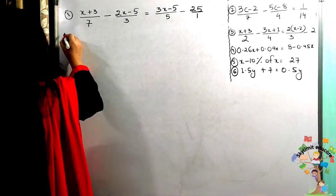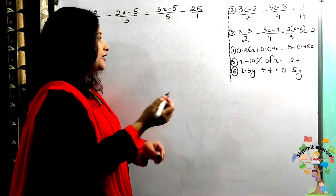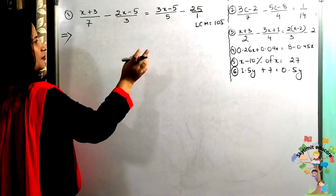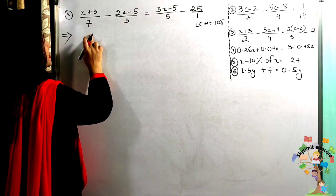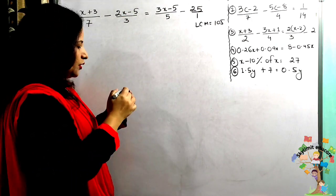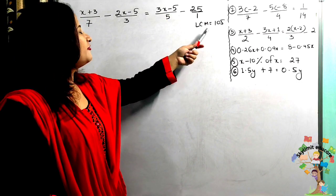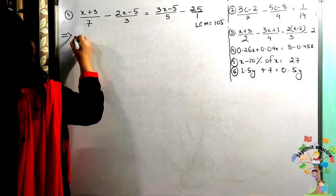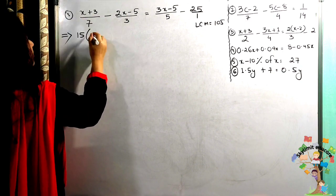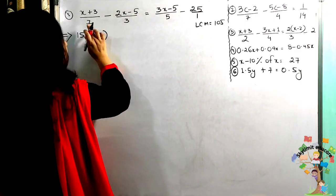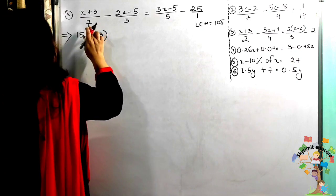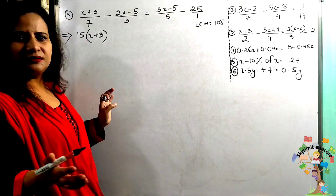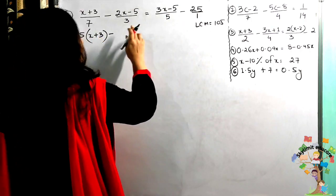So let's start solving. The LCM is 105. You can skip the step of writing 105 multiplied to each term. Instead, LCM divided by the denominator: 105 divided by 7 gives us 15. So I write directly 15 multiplied to (x + 3). I have taken the LCM of the denominators first, then LCM divided by the first denominator — 7 — gives 15, so multiply 15 with the numerator.